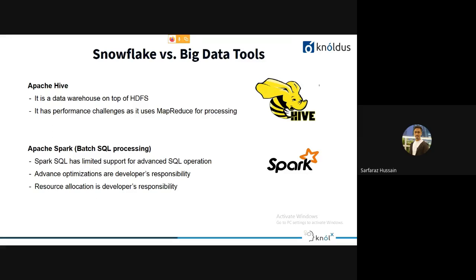Let's compare Snowflake with some big data technologies. Apache Hive is a data warehouse on top of HDFS, but it has performance challenges because internally it uses MapReduce for processing. MapReduce is slow for processing huge amounts of data as it involves multiple input and output operations.